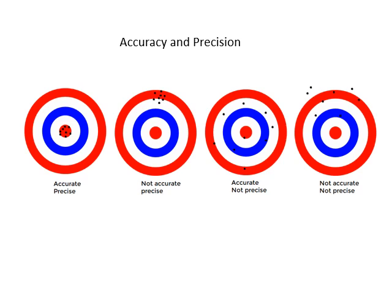The second one is precise but not accurate at all - there appears to be some systematic error there. The third one is actually accurate because if you took an average of all those readings it would be pretty close to the true value. The last one is just rubbish - it's not accurate and it's not precise.